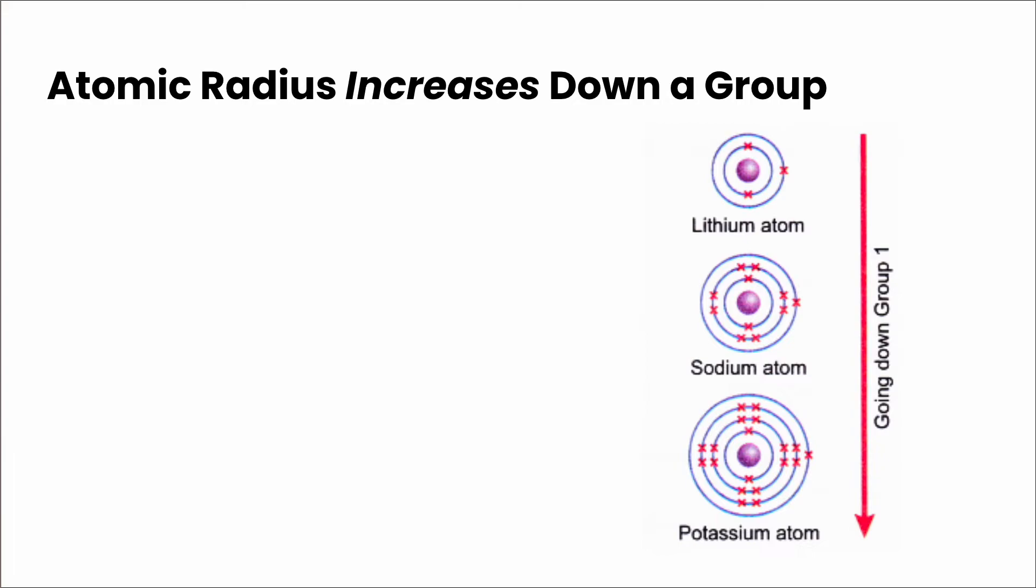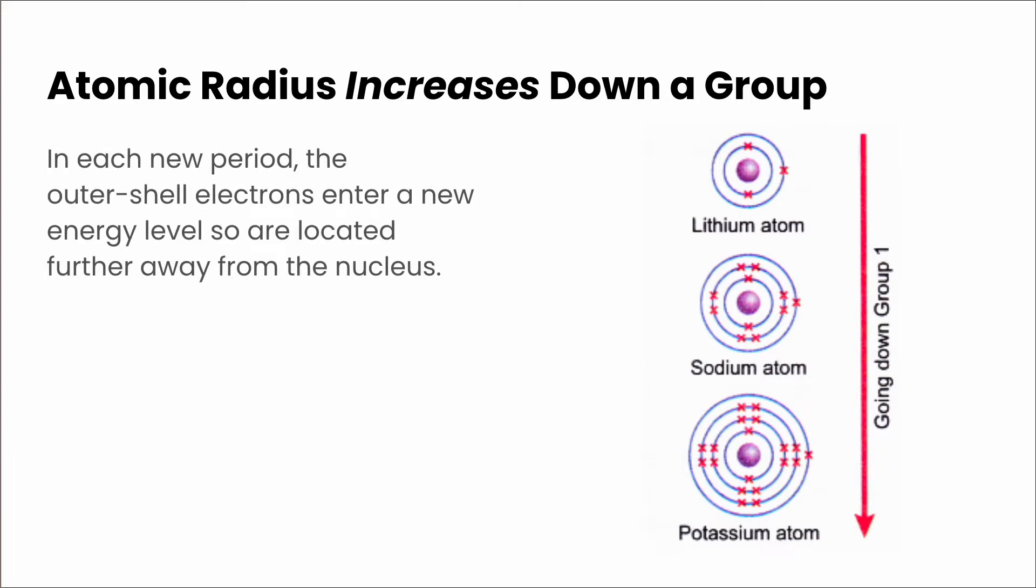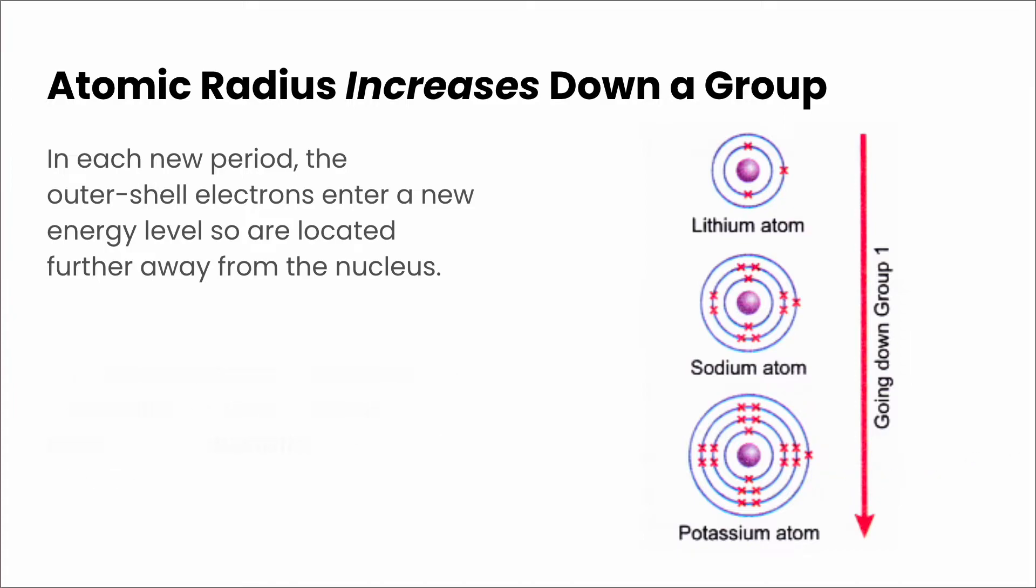Let's first look at atomic radius increasing down a group. So as we go down a group, in each new period, the outer shell electrons or valence electrons enter a new energy level. So they're located further away from the nucleus. If we look at lithium, for example, we have two main energy levels. Sodium has three and potassium has four. So those valence electrons are going further and further away from the nucleus.